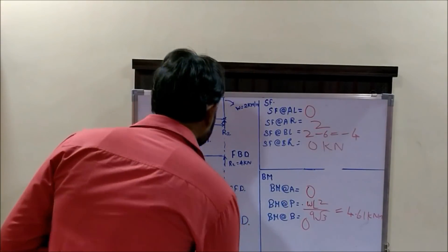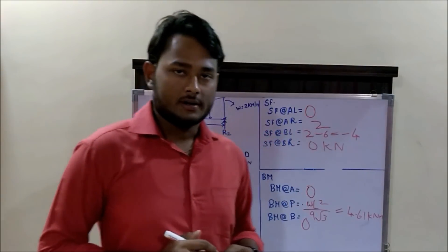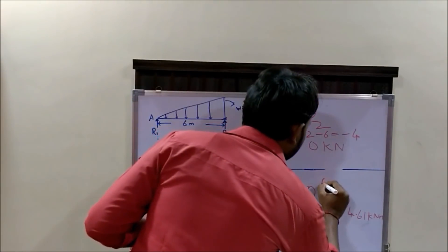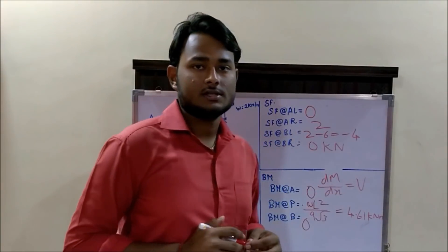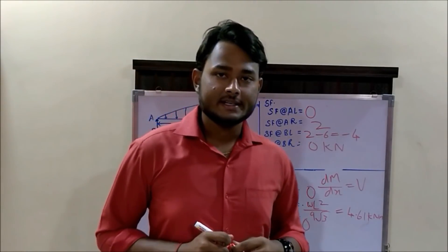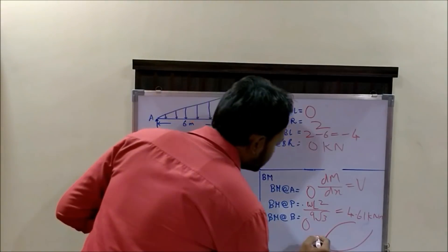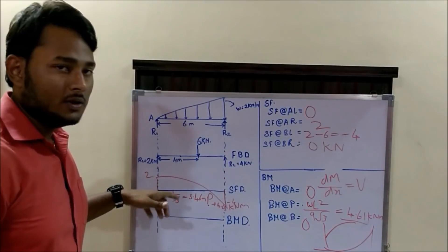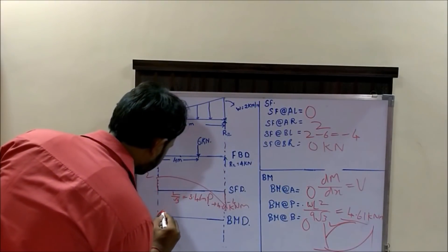So, the bending moment at point P is +4.61 kN·m. Now we join all three points using the golden equation dM/dx = V. In the first case, the shear force decreases from 2 to 0, so we need a curve whose slope decreases. In the first possible curve, the slope decreases from 90° to 0°; in the second, it increases from 0° to 90°. Since the shear force decreases, the first curve fits and those points are joined accordingly.